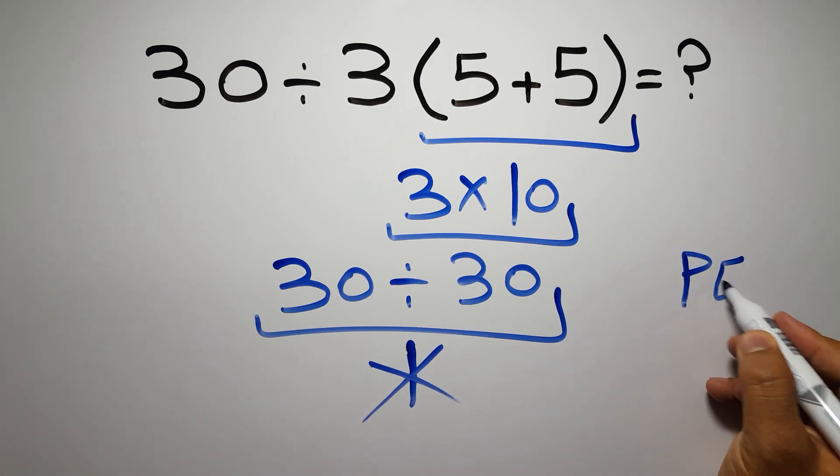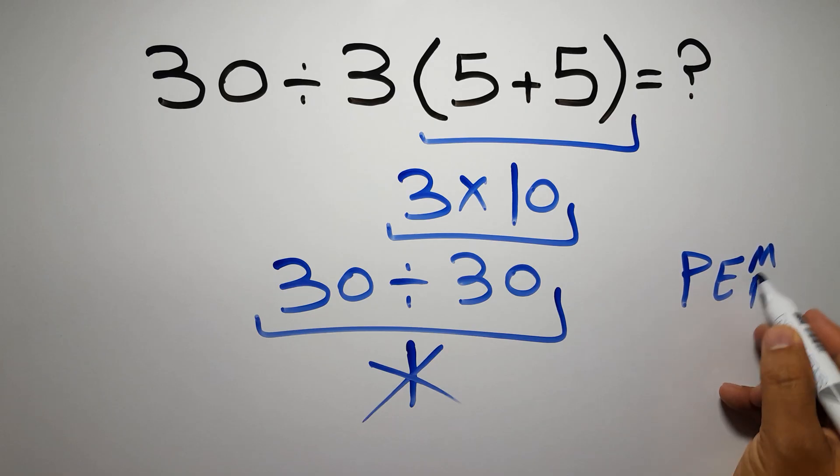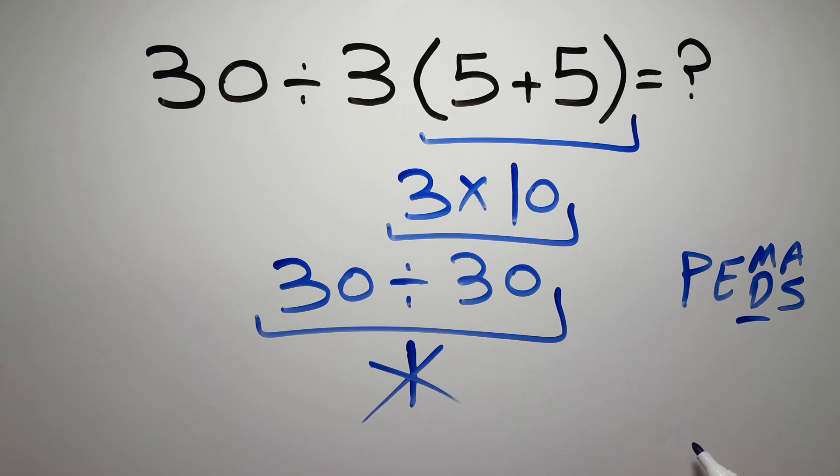to do parentheses, then exponents, then multiplication or division, and finally addition or subtraction. Remember that multiplication and division have equal priority and we have to work from left to right. The same applies to addition and subtraction.